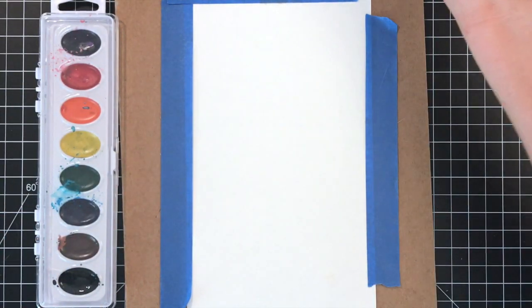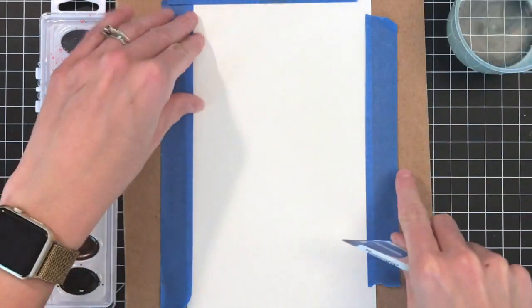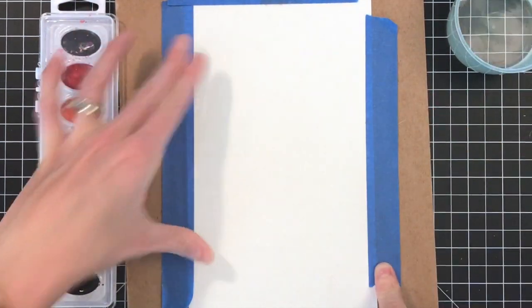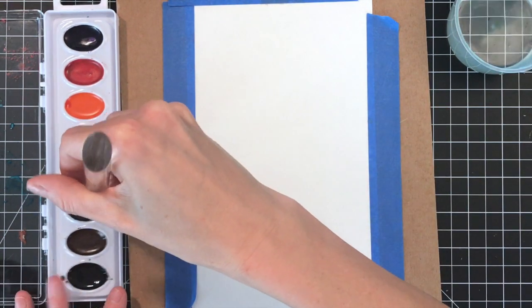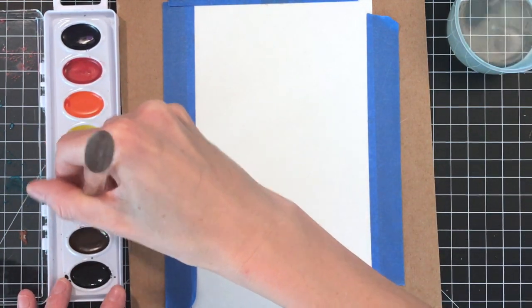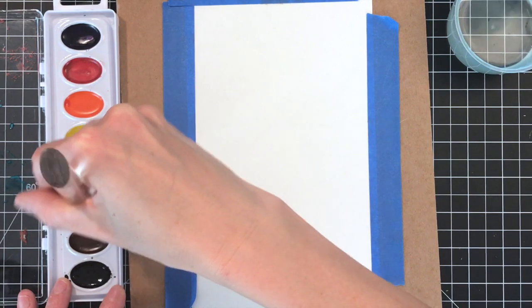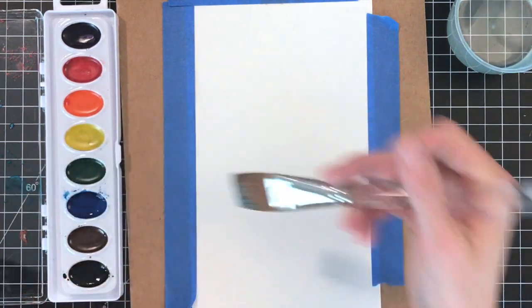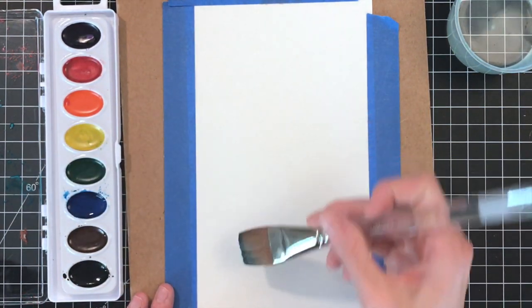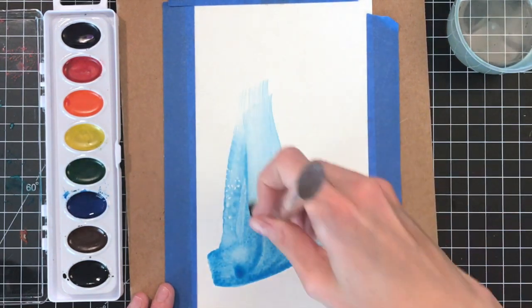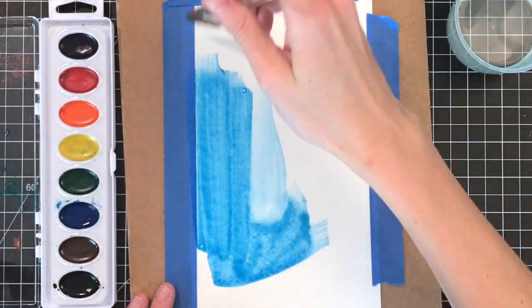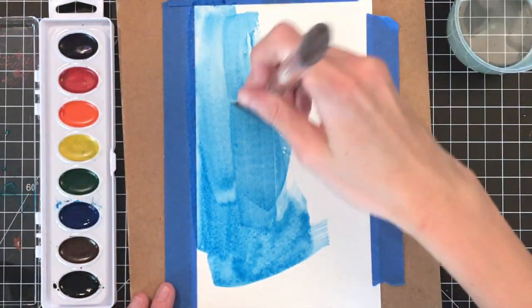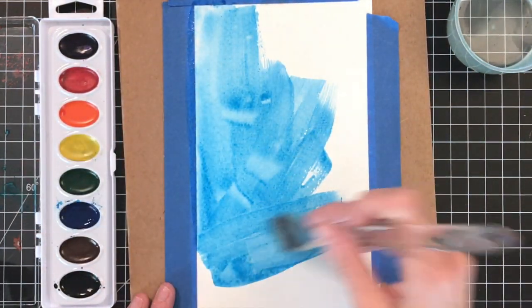I'm going to start by laying down some color on a watercolor sheet. This is actually probably I think six by nine. It's bigger than I'm going to cut it down using the Lacy Layers 5x7 dies to a 5x7 panel. But first I'm going to just lay down some color on here. I'm just using my watercolors. This is an inexpensive watercolor set. You can use whatever watercolors you have.